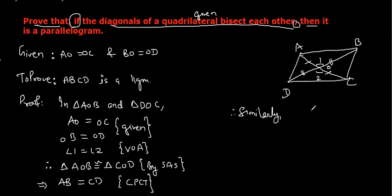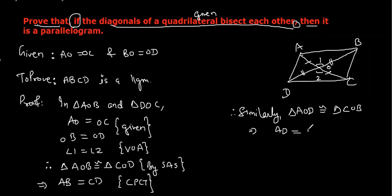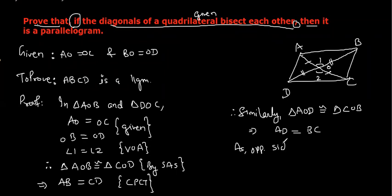Similarly, triangle AOB is congruent to triangle COB — these two triangles are also congruent. And hence, AD equals BC. That understanding is very important because the parallelogram is a basic figure which will help you in proving all the other figures. As opposite sides are equal, therefore ABCD is a parallelogram.